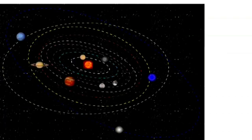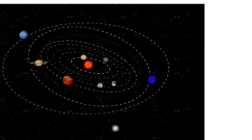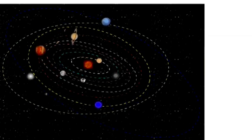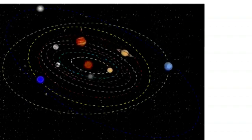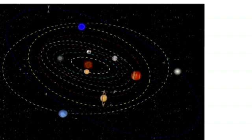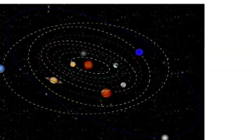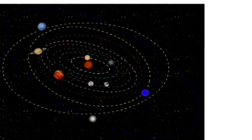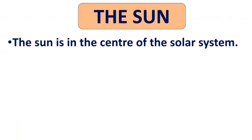Now see this image of the solar system — you can see the sun in the center and the eight planets, and all the eight planets are revolving around the sun. So first of all, we will talk about the sun. The sun is in the center of the solar system.